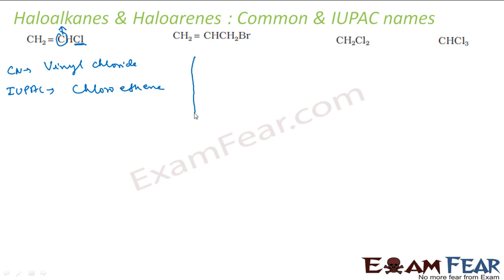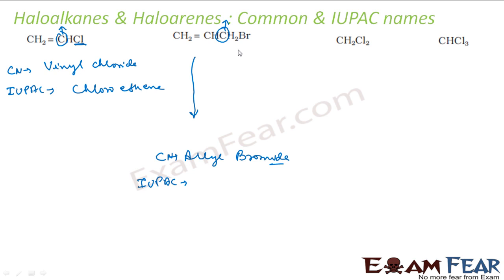Let's take this example: CH2=CH-CH2Br. This is an allylic carbon attached to a double bond, so the common name is allyl bromide. For the IUPAC name, number it giving priority to the double bond: 1, 2, 3 — so it will be 3-bromoprop-1-ene.